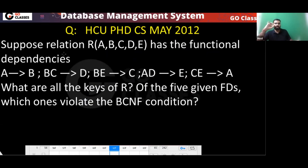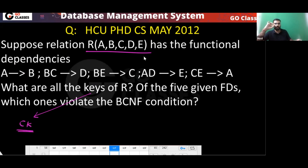A relation is given with attributes ABCDE and the following functional dependencies. When the question asks for 'key', it means candidate key. So you have to find all the candidate keys.